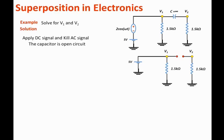Now the circuit is very easy to analyze. The voltage V1 becomes the same voltage across the 1.5 kilo ohms, which is the same voltage as the 5 volt voltage source. So we can state that V1 DC equals 5 volts.